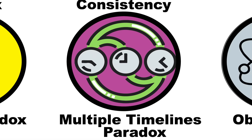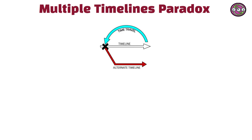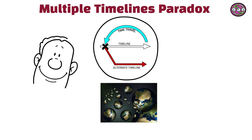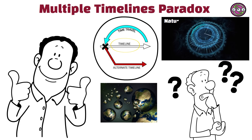The multiple timelines paradox arises from the idea that time travel might create alternate timelines or parallel universes. While this concept potentially solves many time travel paradoxes by allowing changes without affecting the original timeline, it raises new questions about the nature of reality and the consequences of creating multiple versions of history.